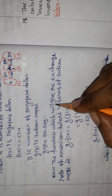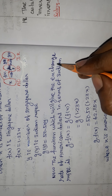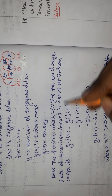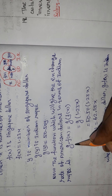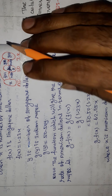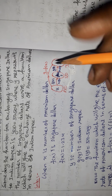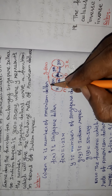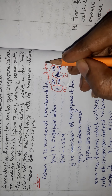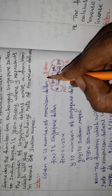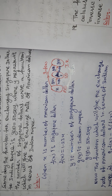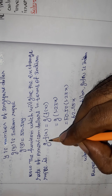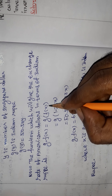The function which will give the exchange rate of American dollars in terms of Indian rupees is G composite F of X. So G composite F of X is what we need to find out. G composite F of X equal to G of F of X.